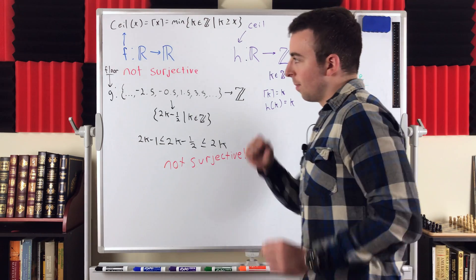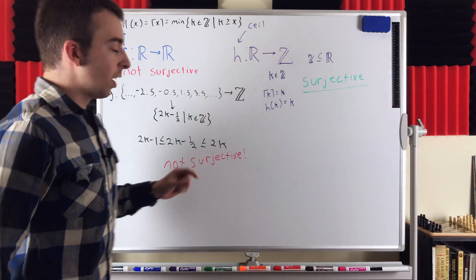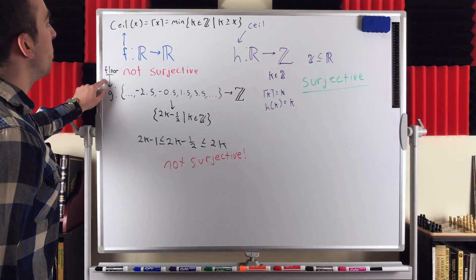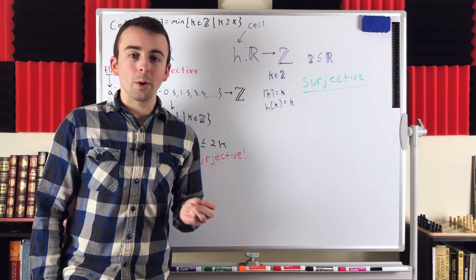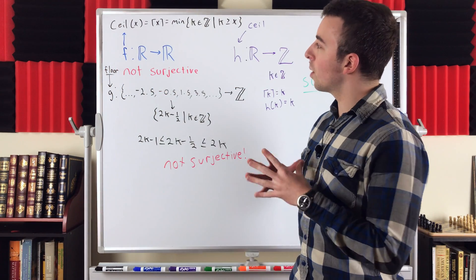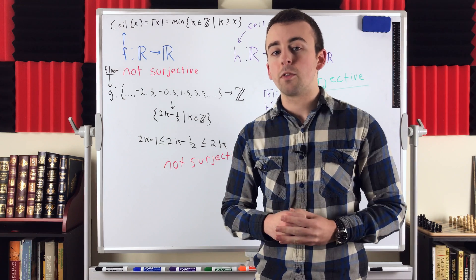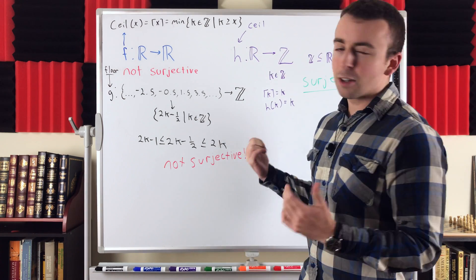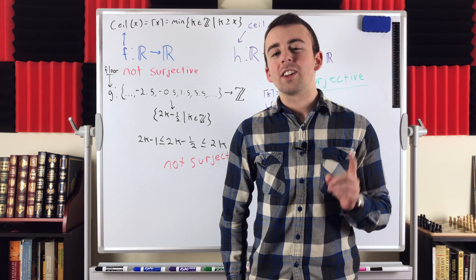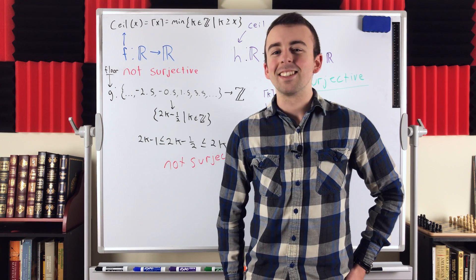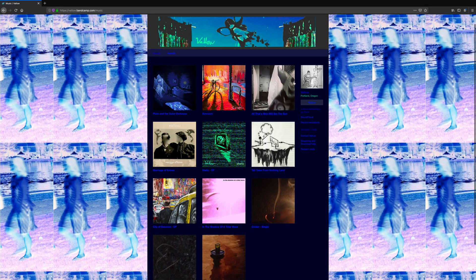What would happen if g were the ceiling function instead of the floor function? Consider that as practice — let me know in the comments what numbers would get mapped to and whether that makes it surjective. I'll leave the answer in the description. I hope this video helped you understand when floor and ceiling functions will be surjective, and helped build intuition based on the domain and codomain. Thanks for watching — subscribe for the swankiest math lessons on the internet, and thanks to Vallo for permission to use his music; link in the description.